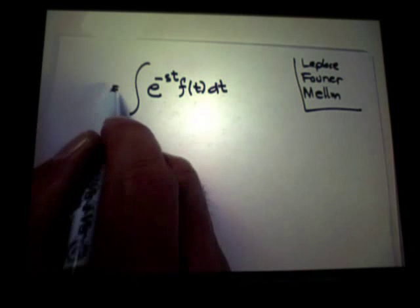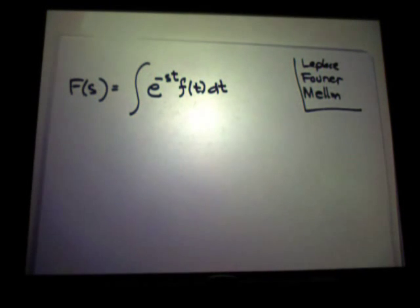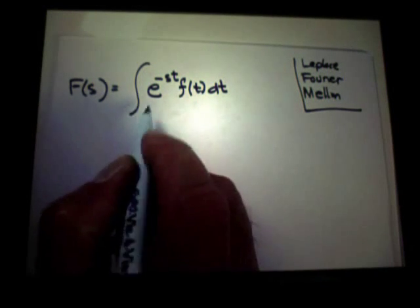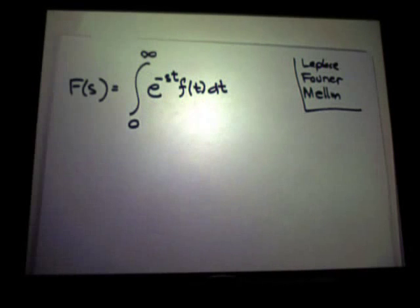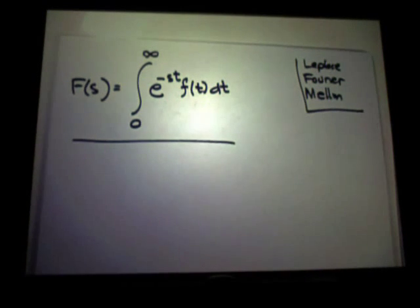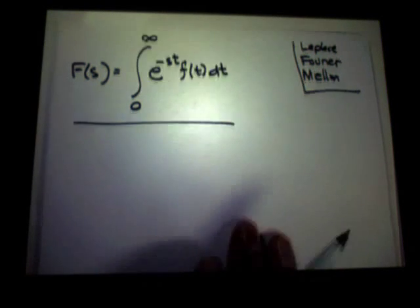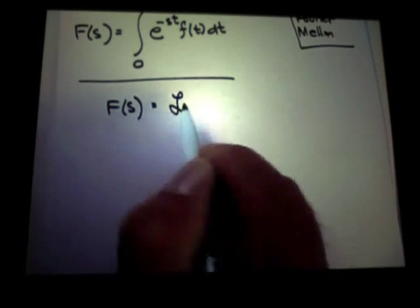So away go all the t's. This t will be gone, that t will be gone. And the result will be a function of s, capital F of s. And my domain of integration is from the origin to plus infinity.